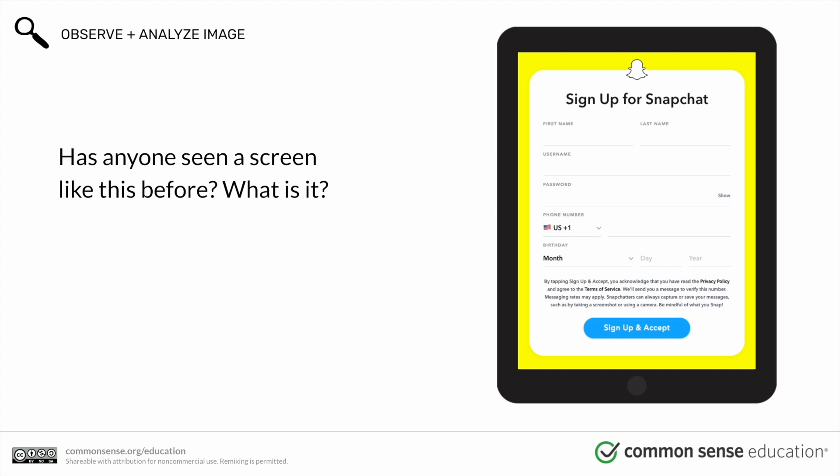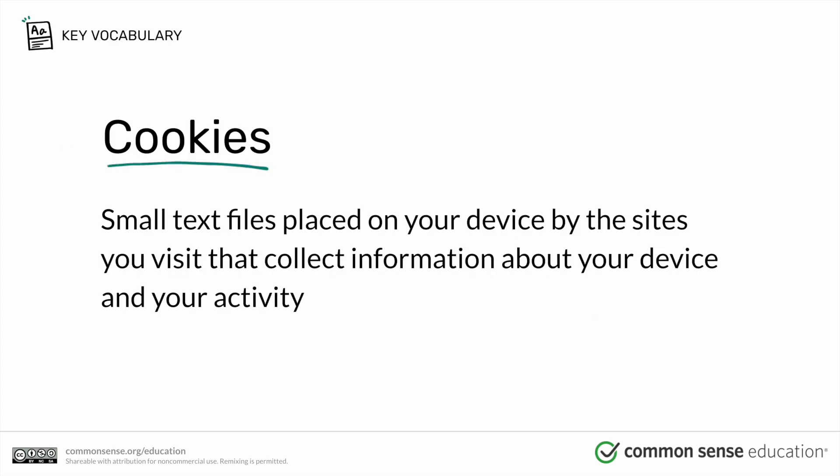The first way to protect your information is to understand what companies are collecting about you. If there's something students don't want companies or others to know about, they shouldn't provide or post it. Companies get information about you by tracking what you do, and one way they do this is by using cookies.